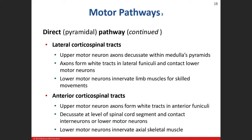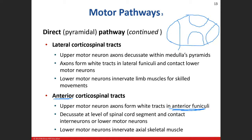For the anterior corticospinal tract, the upper motor neuron still originates in the cerebral cortex and travels down, but it enters into the anterior funiculi - it does not decussate in the brainstem. The anterior corticospinal tract decussates in the spinal cord at specific spinal cord segments - it could be C5, T8, or L1. It varies depending on where it's going in the body, but it will decussate at a specific level.